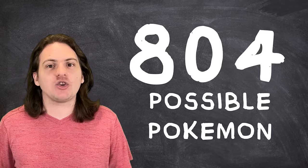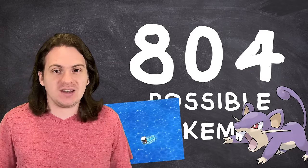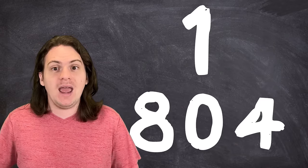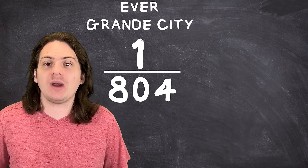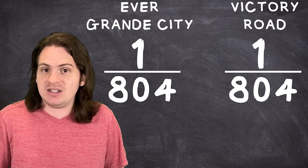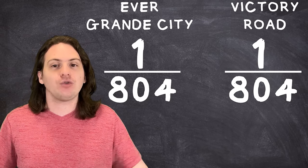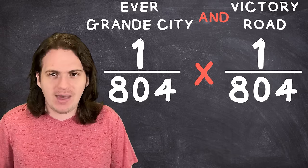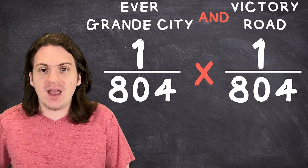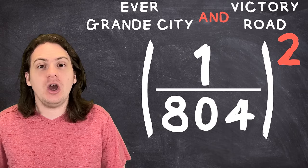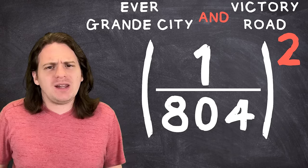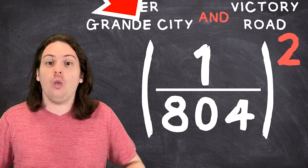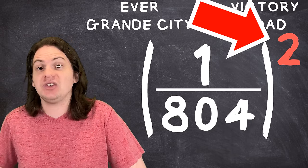So, that means that the odds of encountering a Rattata in Evergrande City, or any given route for that matter, without knowing the encounter pool ahead of time, is simply 1 in 804. The odds of encountering a Rattata in Victory Road is exactly the same. So, to find the odds of finding a Rattata in Evergrande City and then in Victory Road, we just simply multiply these two odds together. Since the odds are the exact same for both areas, we can simplify this to be 1 in 804 to the second power. To put it more generally, the odds of something happening several times in a row is simply the odds of it happening once, raised to the power of the number of chances it has to occur.